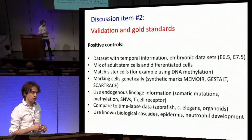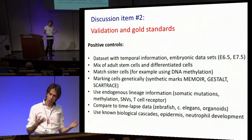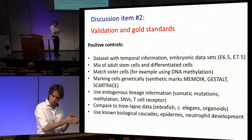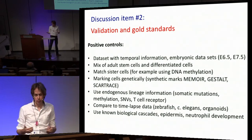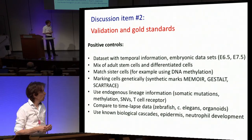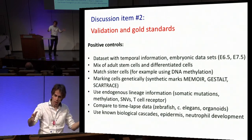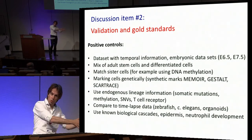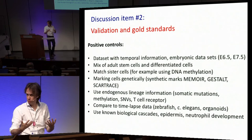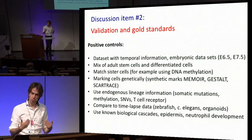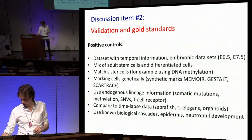Another thing not to forget is that there's already a lot of knowledge out there — people know how cell types are generated, for example in epidermis or in neutrophil development. People know there are six subtypes, the early ones and the mature ones. You can use this also to test-drive your software on trajectories.